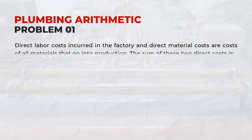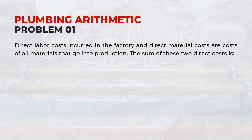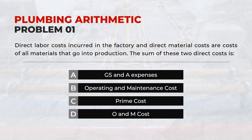Direct labor costs incurred in the factory and direct material costs are costs of all materials that go into production. The sum of these two direct costs is: C — Prime Cost.